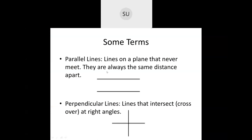So parallel lines — lines that are on a plane that never meet and they are always at the same distance apart. If you see here, the distance between these two lines is the same everywhere — it is the same here, it's the same here, it's the same here. So even if you extend these two lines, they will never meet. You can extend them as much as you want, these two lines will never meet and they remain at the same distance every time.